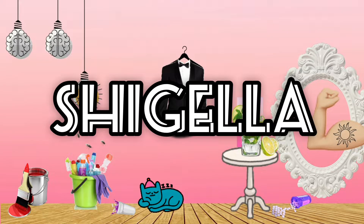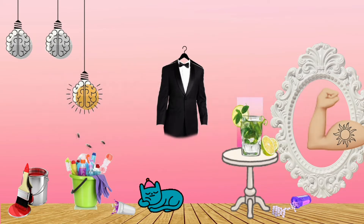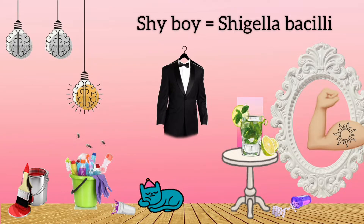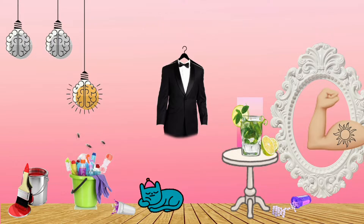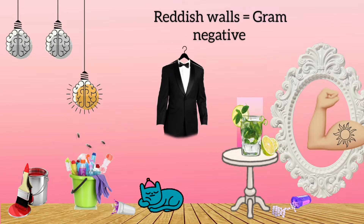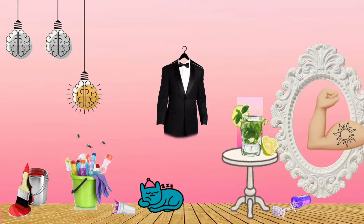This visual mnemonic is about Shigella, represented by a shy boy. The reddish walls represent that this is a gram-negative bacilli.